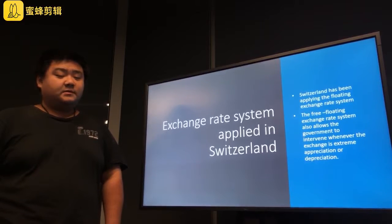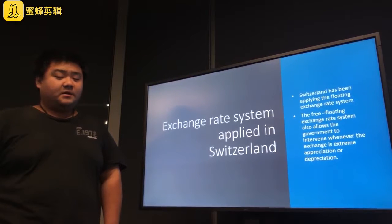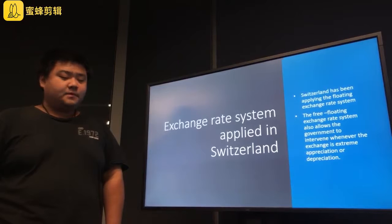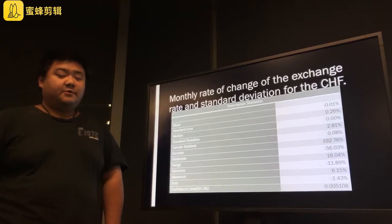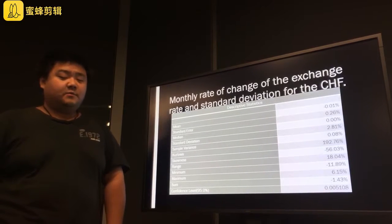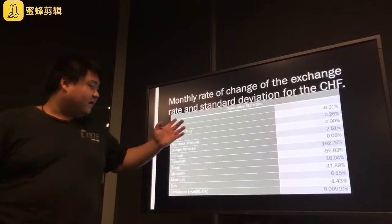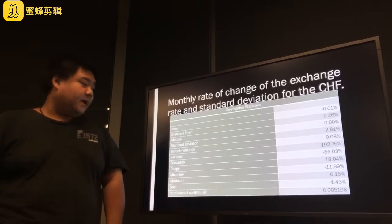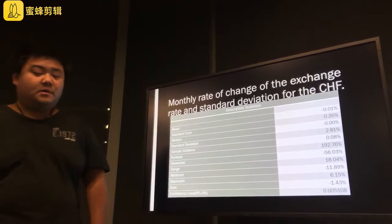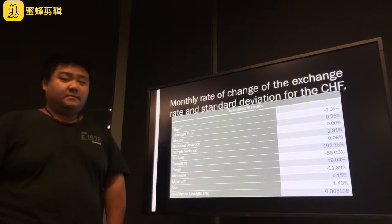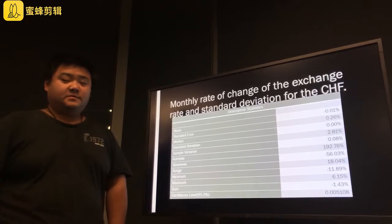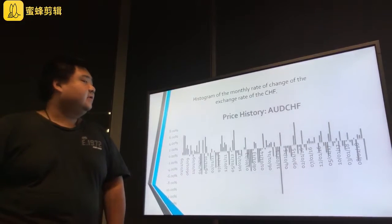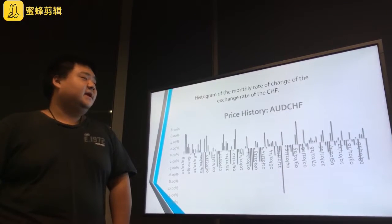This cap was later abandoned in January 2015. This occurred when the CHF experienced substantial appreciation, requiring the involvement of the central bank in buying the currency at the specified rate in order to maintain the target rate. We can now see the monthly rate of change of the exchange rate and the standard deviation for the CHF. From this table, the mean monthly rate for the period has been estimated to be minus 0.01%, while the standard deviation has been estimated to be 2.81%.